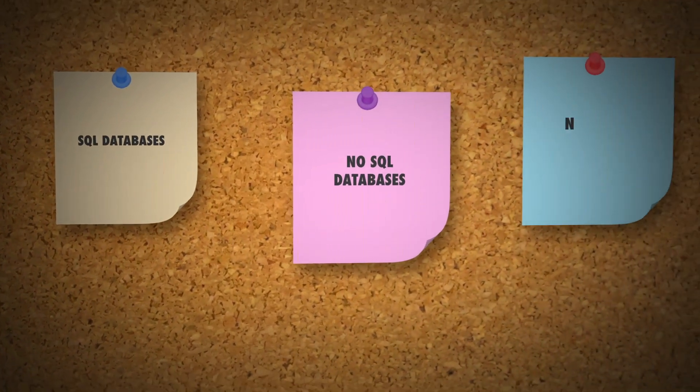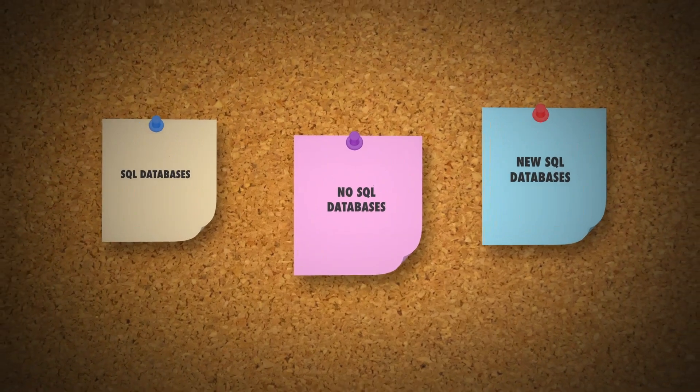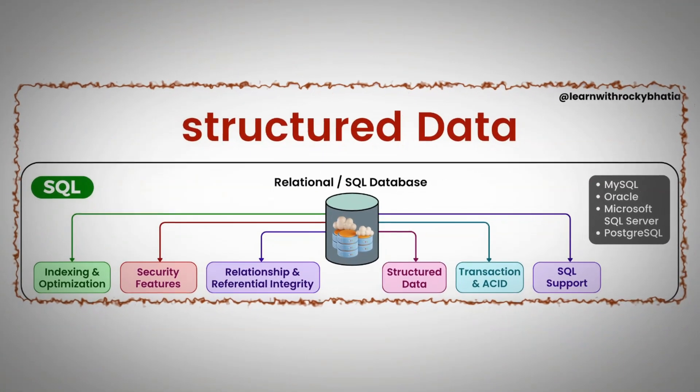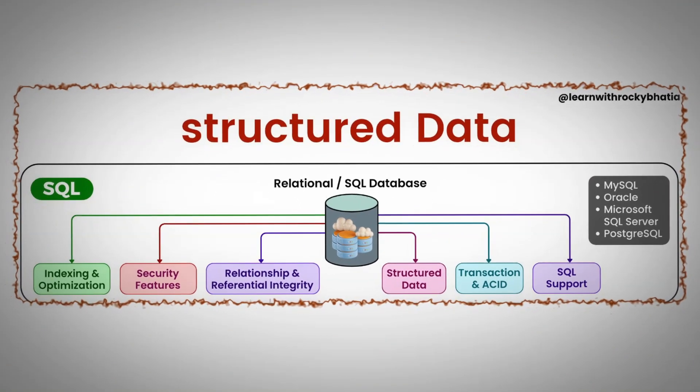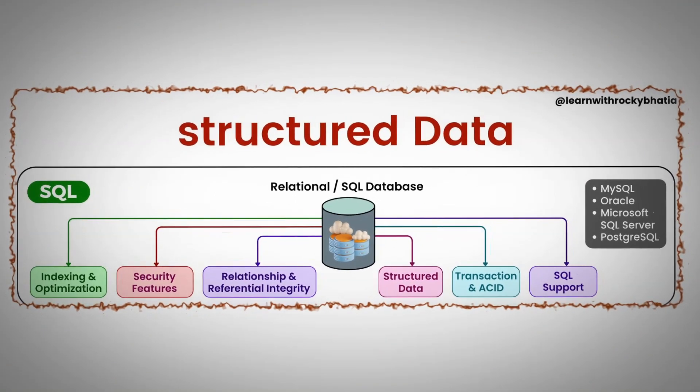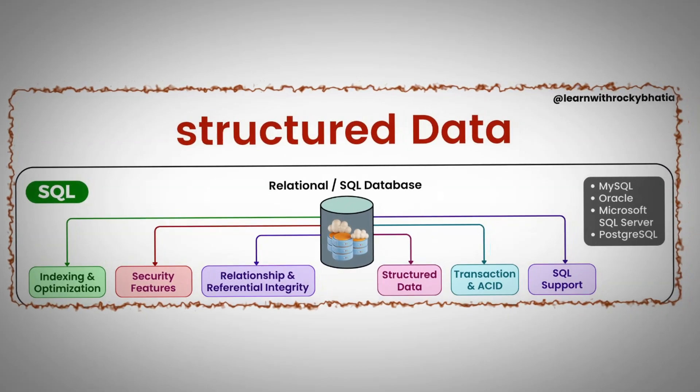First of all, databases can be divided into three categories: SQL databases, NoSQL databases, and NewSQL databases. SQL databases deal with structured form of data — where the schema is fixed, data is in completely structured form, in tables with rows and columns. We can run SQL on top of that data. SQL databases follow the ACID properties.